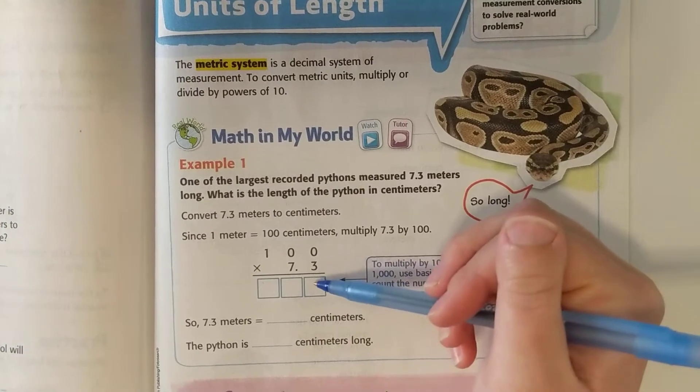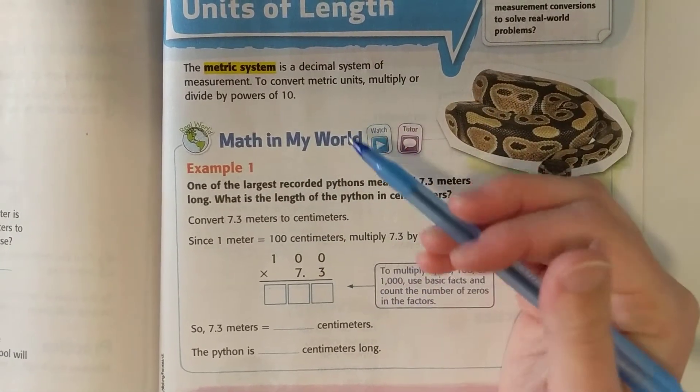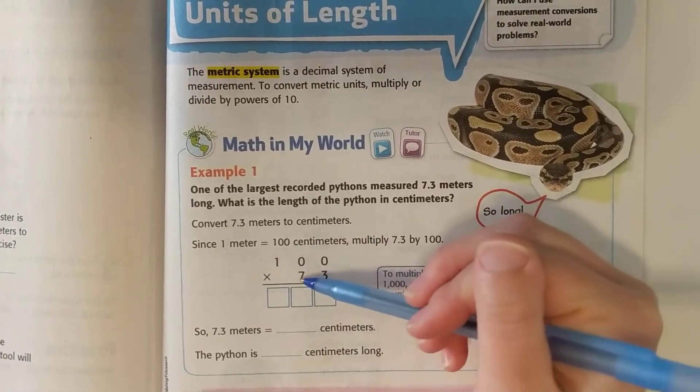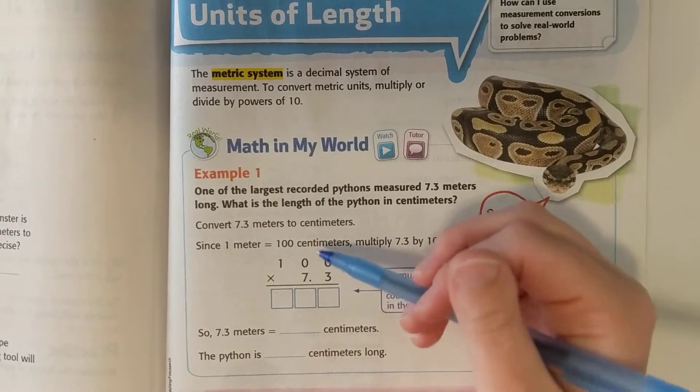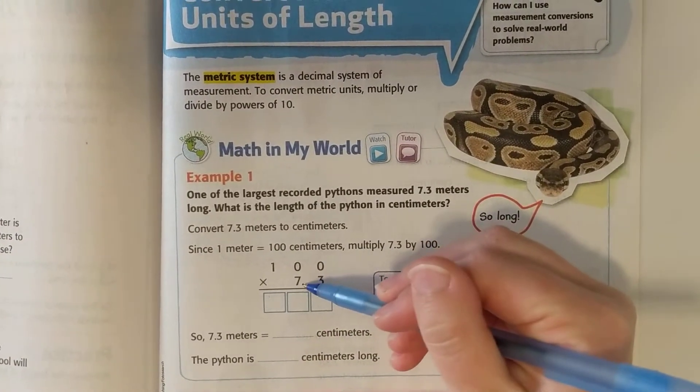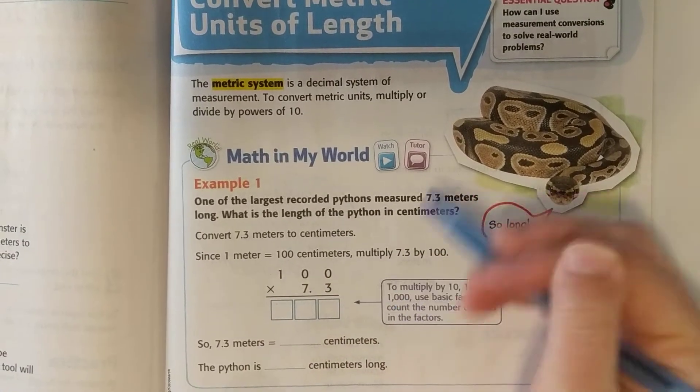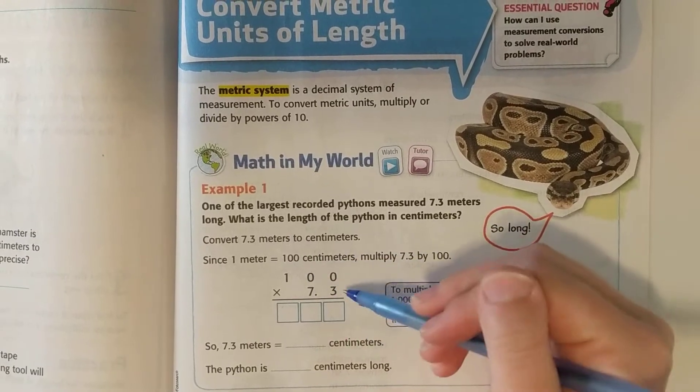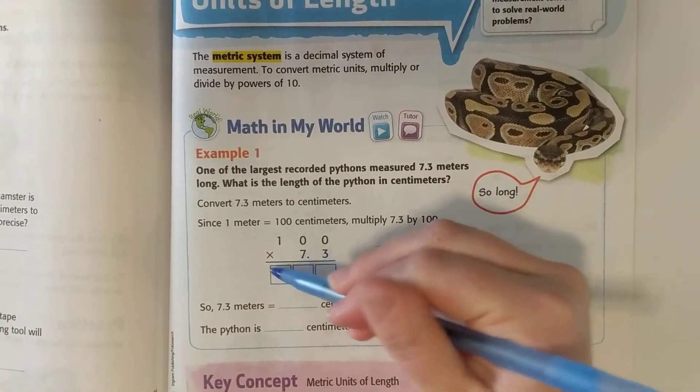When we multiply it by 100, I could do 3 times 0, 3 times 0, 3 times 1 and so forth, then put our placeholder 0, 7 times 0, 7 times 0, 7 times 1, then put our decimal place. But you can also remember that little rule where the number of zeros is the number of times you move over the decimal place. For multiplying, you're moving it to the right to make it bigger, and when you divide, you move it to the left.